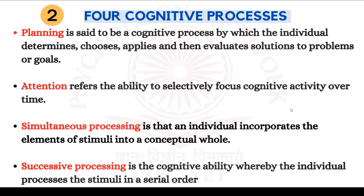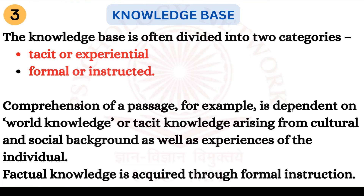These four cognitive processes are embedded in the knowledge base. The knowledge base can be divided into two categories: tacit or experiential, and formal or instructed. Experiential means what you learn from your culture, from relationships with your parents, from your school. Instructed learning is acquired through formal instructions. For example, in India, 'Tata' means bye-bye — that is experiential learning, as Indians associate Tata with bye-bye, but this association may not exist in Japanese or American culture. Formal or instructed learning includes instructions like 'don't eat like that' or 'don't sit like that.'